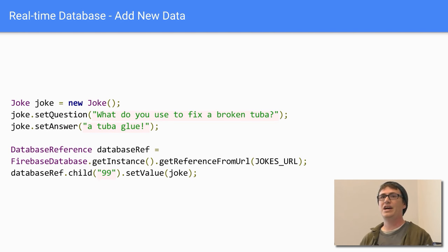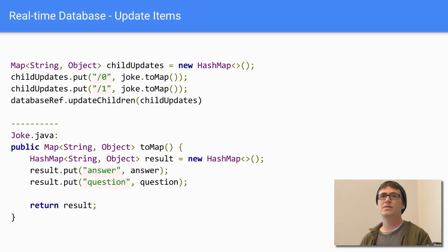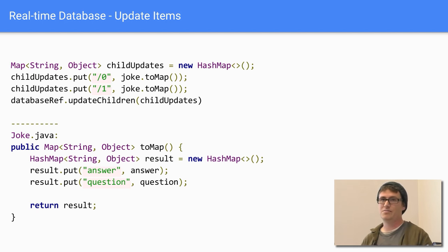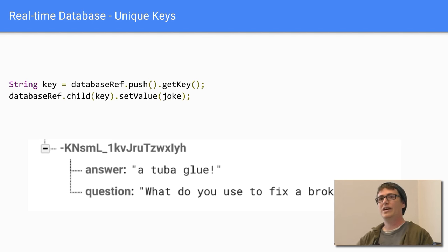Adding data is straightforward. You get a reference to where you want to put data, create your object, specify the child key, and upload the value using setValue. Your object will have a mapping method so it gets placed correctly. For updating, you create a map of string-to-object, put in your keys and joke object, and it maps values to keys. If data is constantly changing and you don't want numbered keys, use the push method to get a unique key and avoid overwriting conflicts.